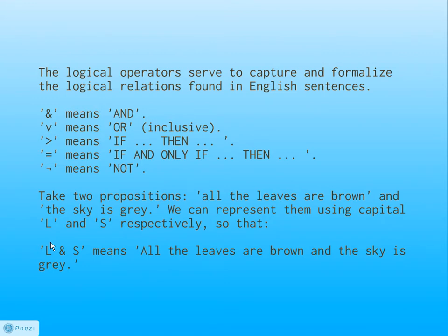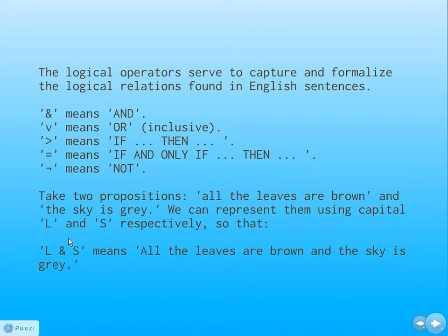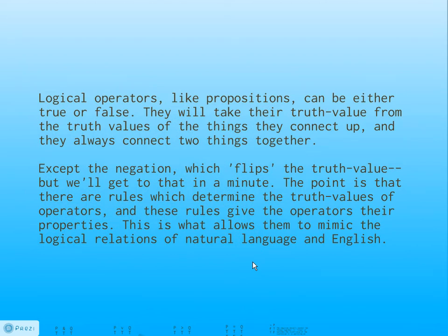The logical operators serve to capture and formalize logical relations commonly found in English sentences: AND, OR, IF-THEN, IF-AND-ONLY-IF, and NOT. For example, we can take two propositions — 'all the leaves are brown' and 'the sky is gray' — and represent them using capital letters L and S. Logical operators take their truth value from the truth values of the things they connect. They always connect two things together, except the negation, which flips the truth value. Rules which determine truth values give the operators their properties, allowing them to mimic logical relations in natural language.